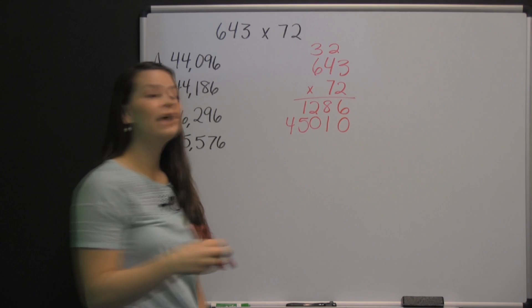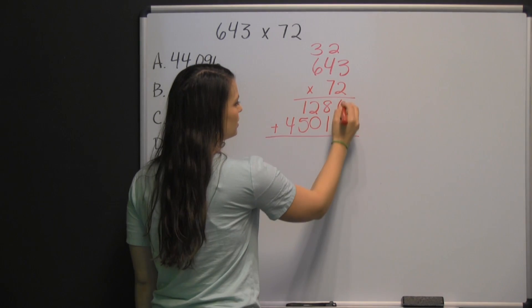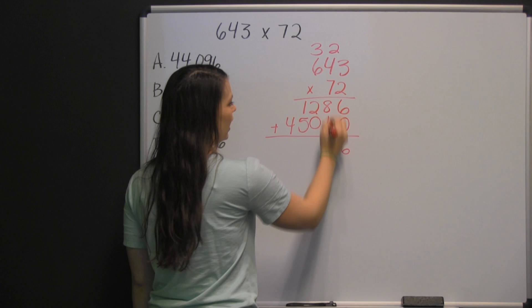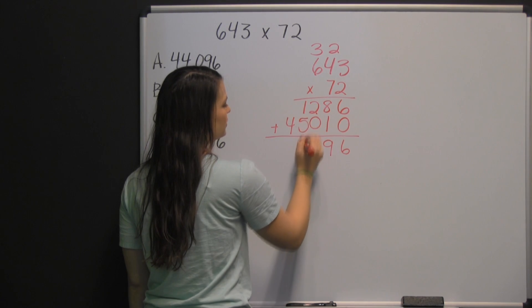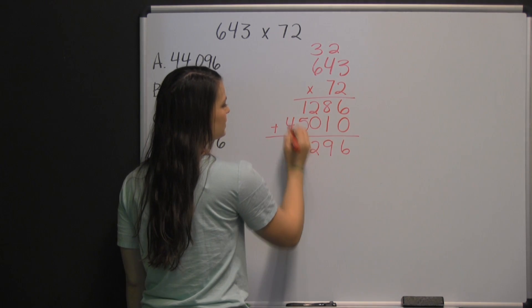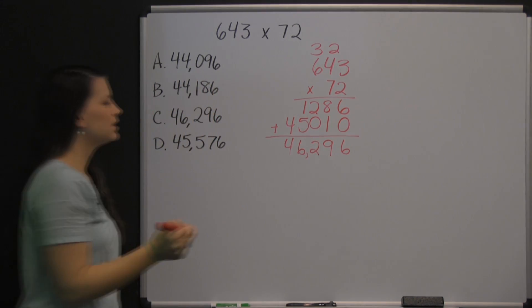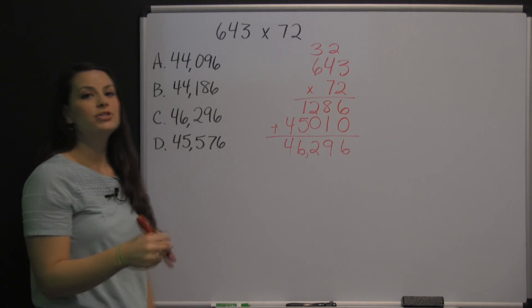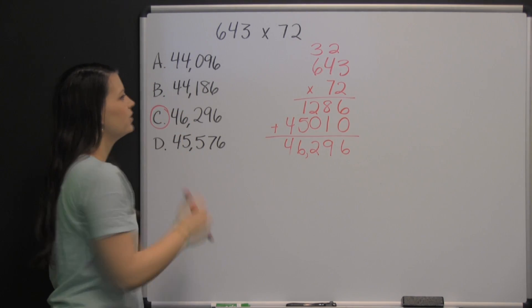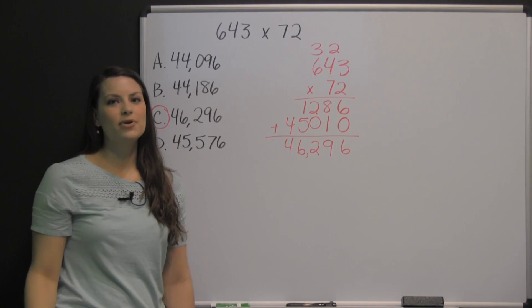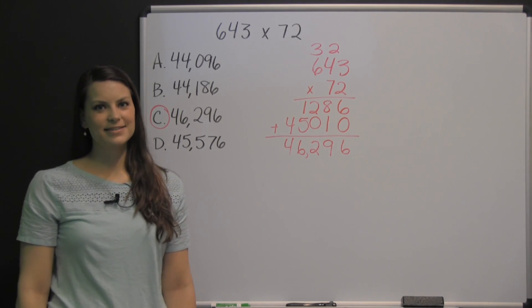Finally, we need to add these two products together. Six plus zero is six, eight plus one is nine, two plus zero is two, one plus five is six, and we have nothing to add to the four, so we bring it down. So, 46,296 is our final product. There's a practice question from the TABE test.